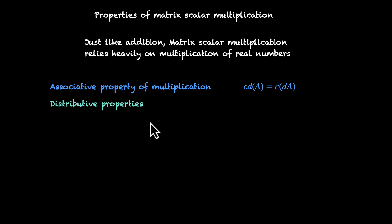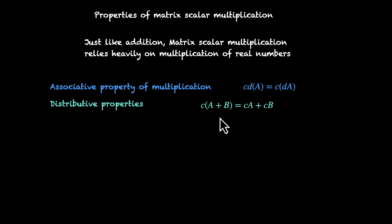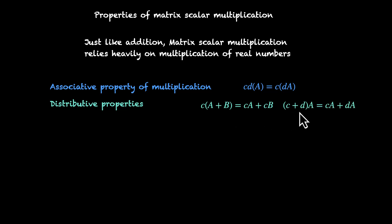Then you have distributive properties. Notice that we are saying properties, not property, so there are two of them. Either you can distribute the scalar, or you can distribute the matrix. If you have something like C times (A plus B), you can distribute the scalar. And it works for the other scenario as well: if you have two scalars being added and you multiply this with a matrix, then you can distribute the matrix. So C plus D times A equals C times A plus D times A. Here you are distributing the matrix; here you are distributing the scalar.